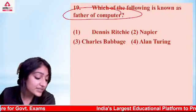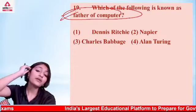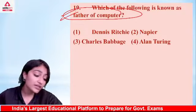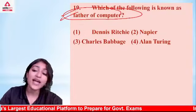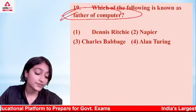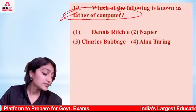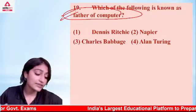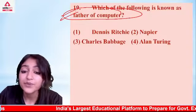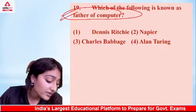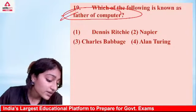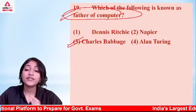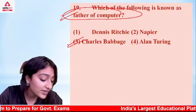Who is considered the father of the computer? Options: Dennis Ritchie, Napier, Charles Babbage, or Alan Turing. The answer is option number 3 — Charles Babbage, absolutely correct.